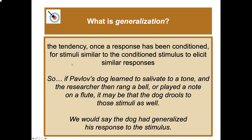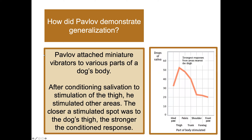Generalization is the tendency, once a response has been conditioned, for stimuli similar to the conditioned stimulus to elicit similar responses. Pavlov's dog learned to salivate to a tone, and when the researcher rang a bell or played a note on a flute, the dog drooled to those stimuli as well — the dog had generalized its response. Pavlov demonstrated this by attaching miniature vibrators to various parts of a dog's body: after conditioning salivation to thigh stimulation, the closer a stimulated spot was to the thigh, the stronger the conditioned response.